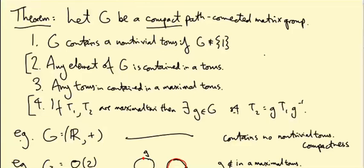We are now going to finish the proof of the parts of this theorem we're actually proving, parts one and three: that a compact matrix group contains a non-trivial maximal torus. What we've established so far is that a compact matrix group contains a non-trivial torus if it's a non-trivial group. We proved this by finding an abelian subgroup which was compact and proving that any compact abelian path-connected group is a torus.